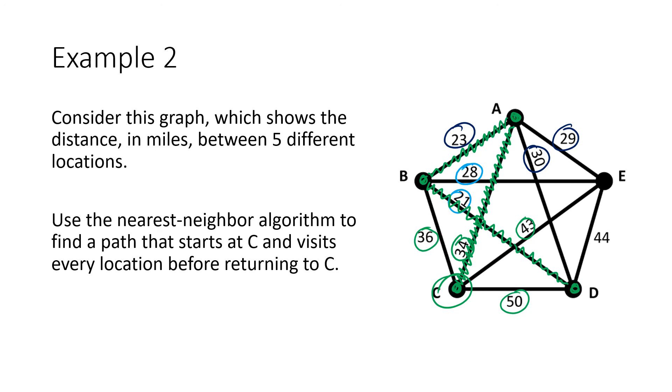The only place we haven't been yet is E, so you've got to go from D to E. It costs us 44 miles. And then finally, we've been everywhere, so now we can return to our starting point, which costs 43. So that's the result that we get from using our nearest neighbor algorithm.